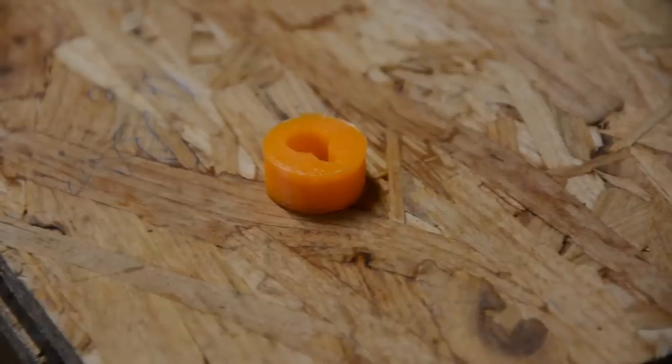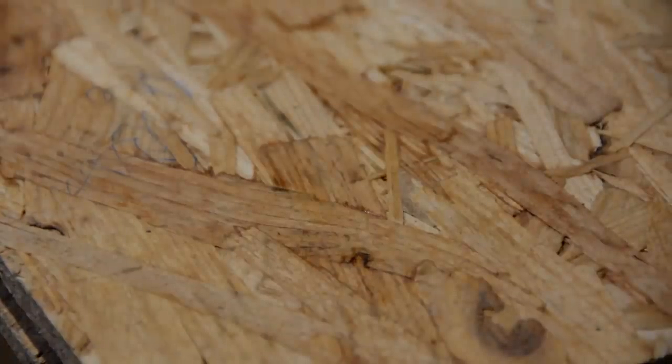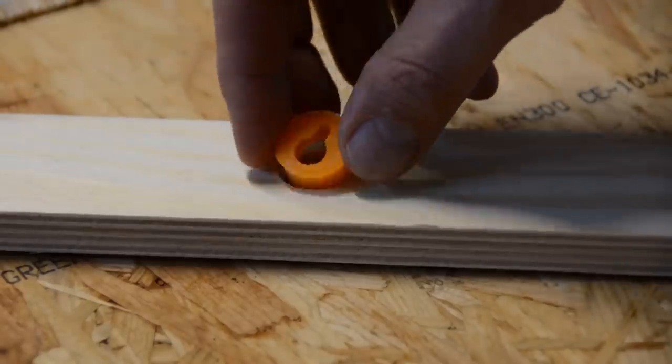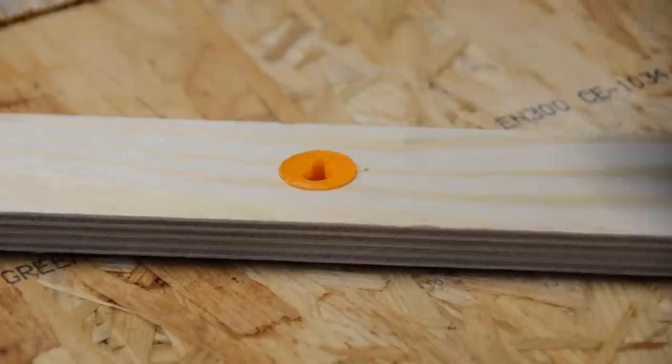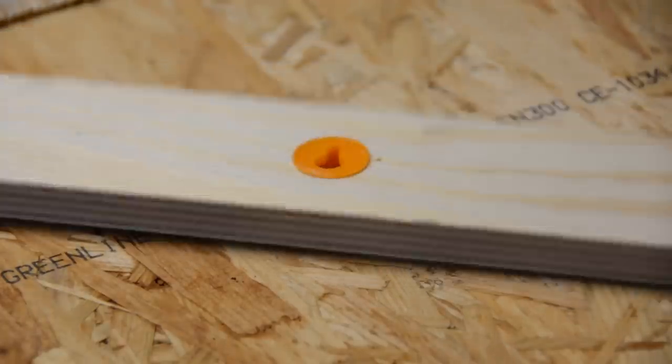Number 8 – keyhole hangers. This is a very simple but quite helpful design that you can customize to your needs on my Thingiverse page. To hang a picture, just bore a right sized hole and either press fit or glue the print in that hole.